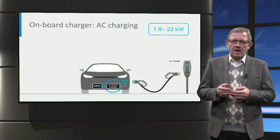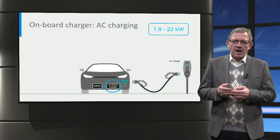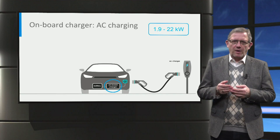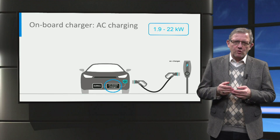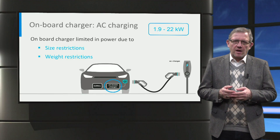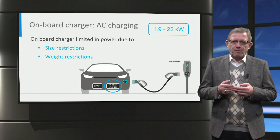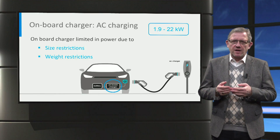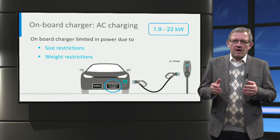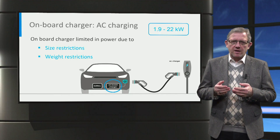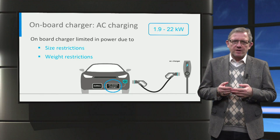The size and weight of the onboard charger are dependent on the maximum charging power. Typically, onboard chargers have maximum power in the range of 1.9 to 22 kilowatts. If the charging power has to be further increased, then the charger will become bigger and heavier. However, due to the size and weight restrictions inside the vehicle, the onboard charger is limited in size and weight as well.